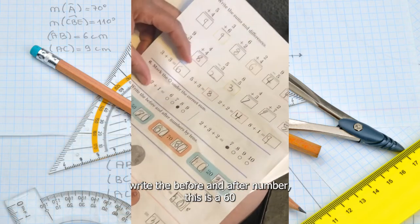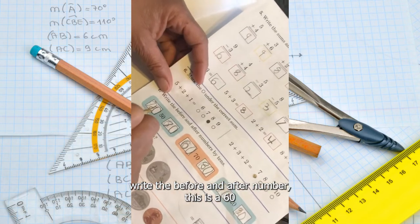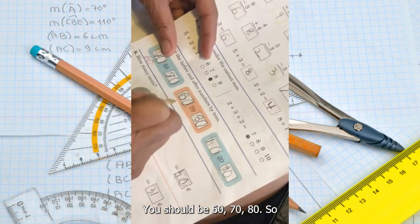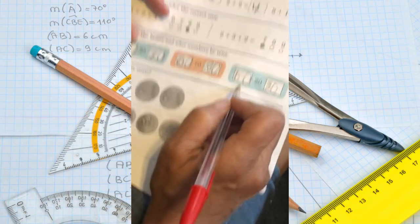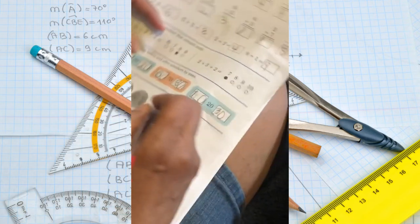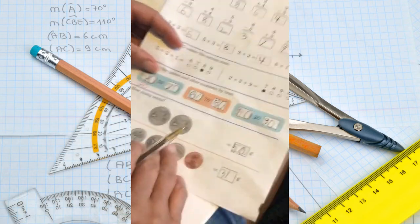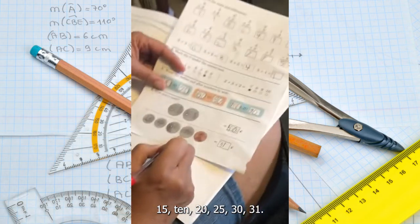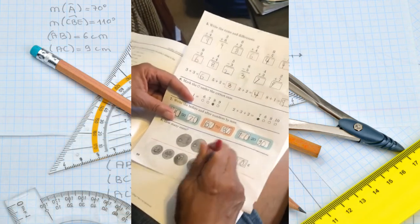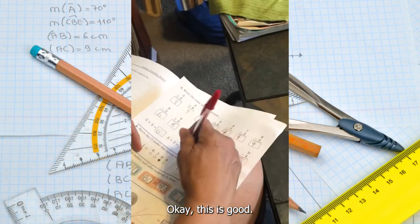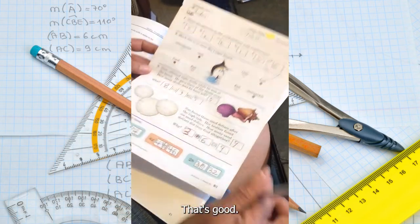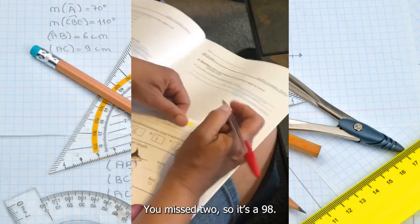Write that before and after number. This is a 60. It should be 60. Fifty, seventy, sixty, seventy, eighty. What is this? Ten? Yeah, ten, twenty, thirty. Fifty. Ten, twenty, twenty-five, thirty. Thirty-one. Okay, this is good. That's good. You missed two, so it's a 98.